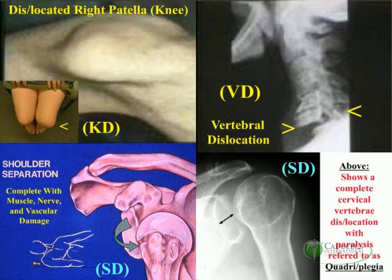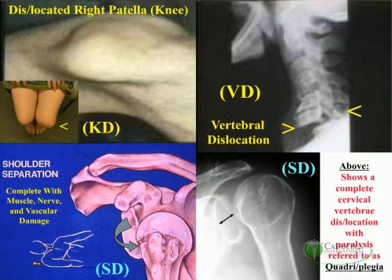At the top left, you see a knee disarticulation, or a dislocated kneecap. And at the right, you see a dislocated vertebrae, or vertebral dislocation — a VD. A KD would be a knee disarticulation to the left, and an SD would be a shoulder disarticulation.